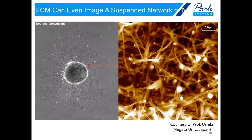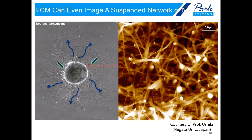In one of the most advanced applications, SICM can even image suspended networks of neurons. We imaged the red circled area in an inverted optical microscope picture. The round shape in the center is a piece of rat brain, and when cultured for a long time in a petri dish, neurons grow all around the brain tissue. In the SICM image, cells connect their long arms to other cells, forming extremely complicated network structures. SICM, especially in ARS mode, can beautifully image the sample without damaging its delicate structure.